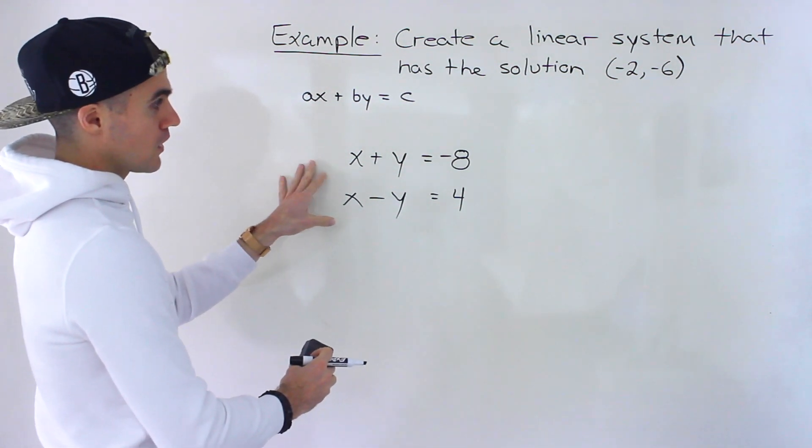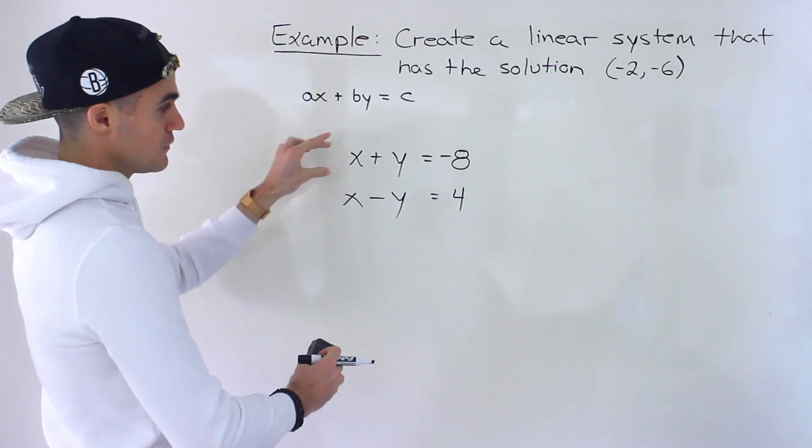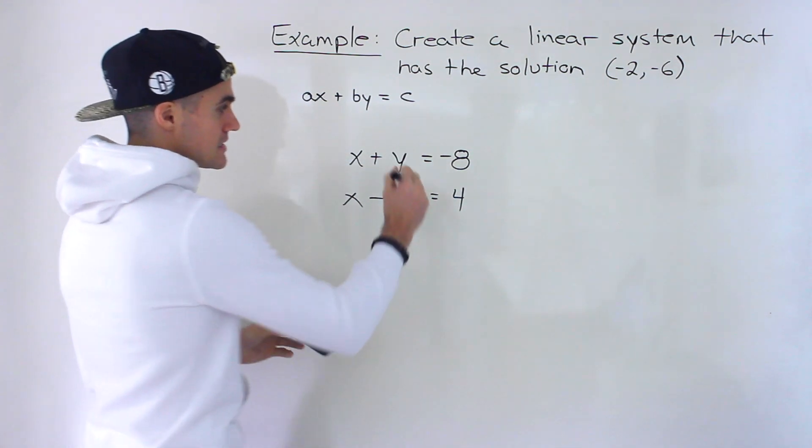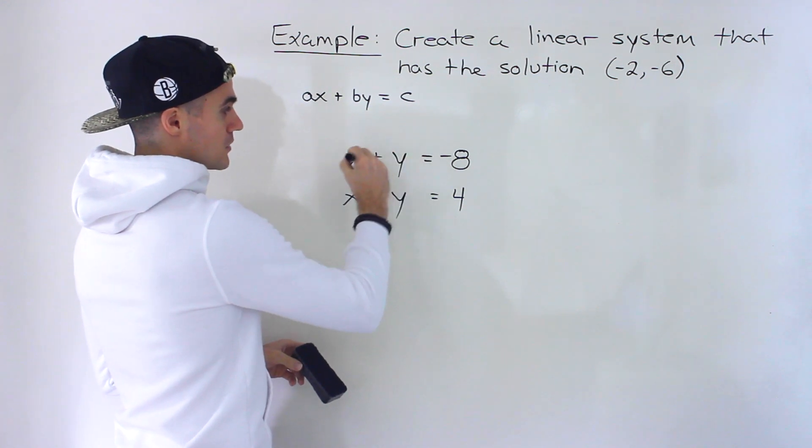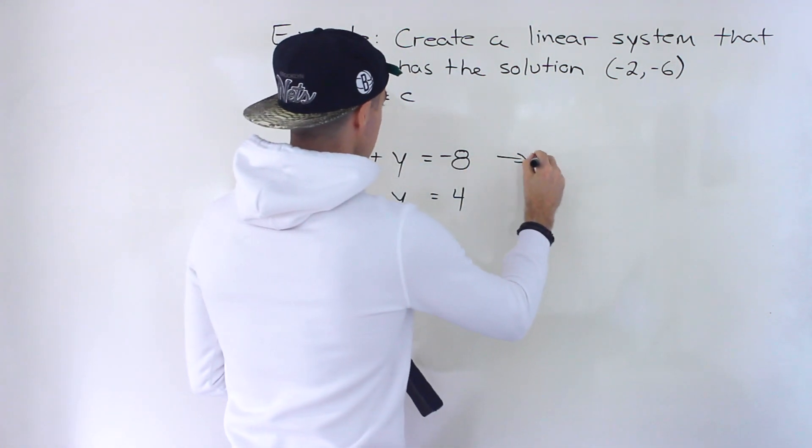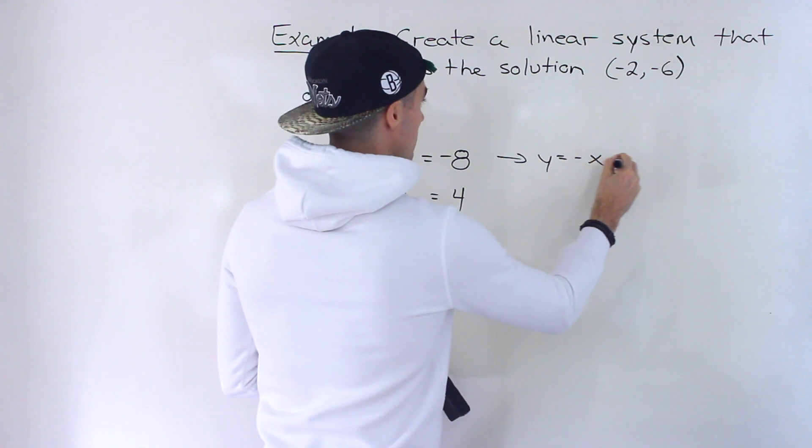And let's say the question requires you to put into y equals mx plus b form, you could start with this and then just easily convert it in terms of isolating for the y. So I'm going to bring the x over. So this line is the same as y equals negative x minus 8.